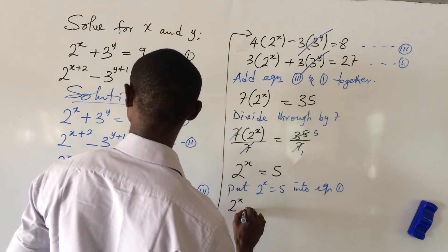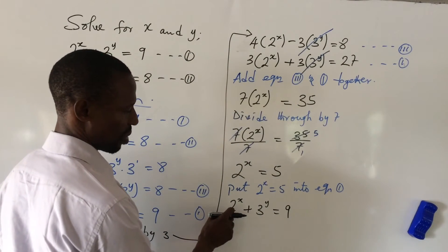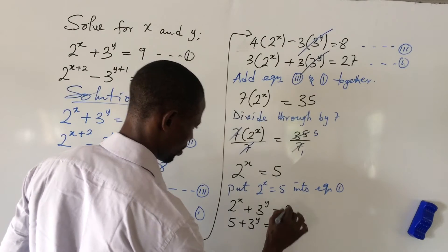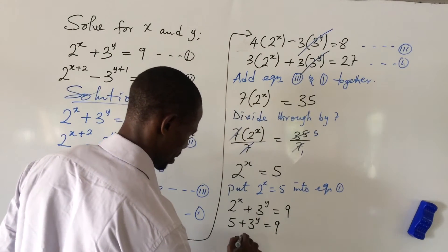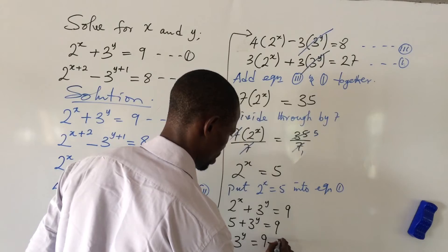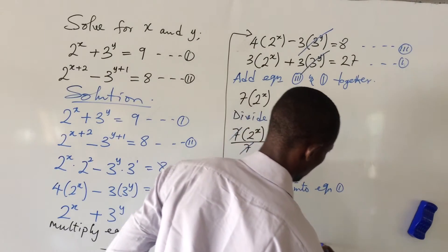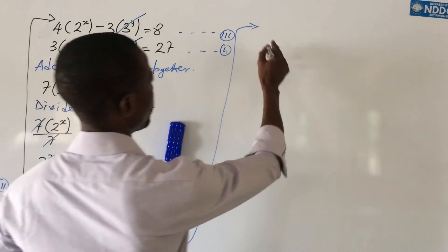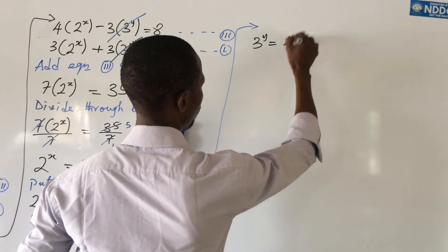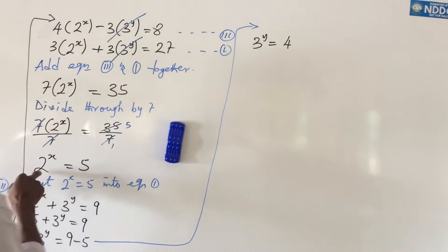Going to equation one: 2 to the power of x plus 3 to the power of y equals 9. We replace 2 to the power of x with 5, giving us: 5 plus 3 to the power of y equals 9. Making 3 to the power of y the subject gives us: 3 to the power of y equals 9 minus 5, which equals 4.